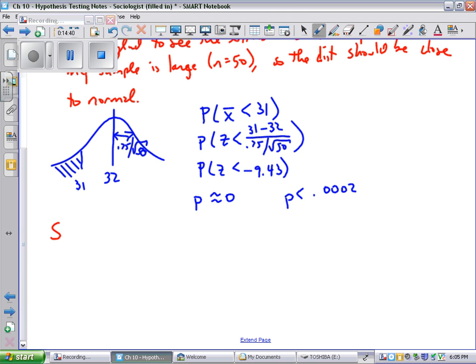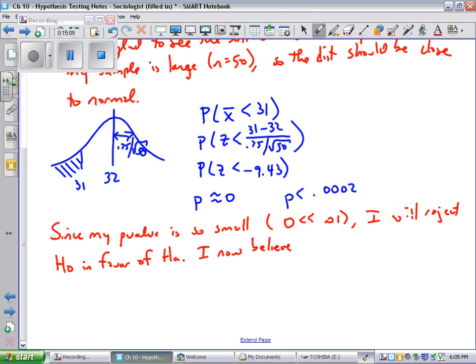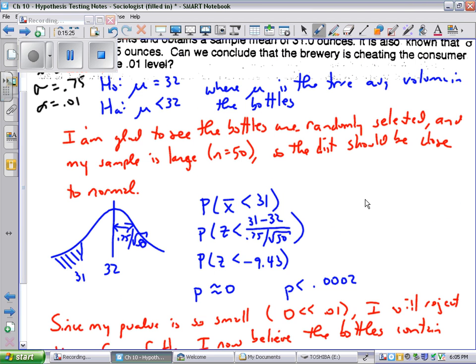Therefore, since my p-value is so small, I mean, it's tiny. 0 is less. In fact, it's way less than 0.01. I will reject H0 in favor of HA. I now believe the bottles contain less than 32 ounces on average. There it is.